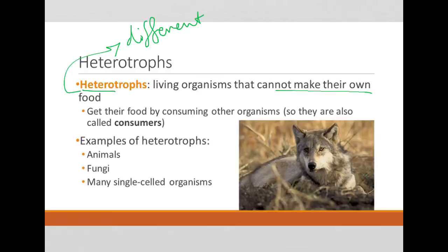They get their food by consuming other organisms — they don't make their food, they get it by eating other things. Therefore, you will also hear them referred to as consumers. Note that heterotrophs can eat autotrophs, so they can eat plants, or they can eat other heterotrophs.